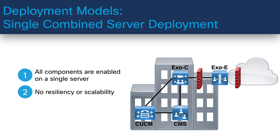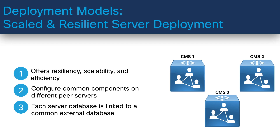As of CMS version 3.0 and later there are two different deployment models. The first is the single combined server deployment, which uses a single CMS with all necessary services running on the same server — simple to deploy and support, but it offers no resiliency or scalability. The alternative is the scaled and resilient deployment model, which can be applied to a group of three or more Cisco Meeting Servers, where common core components can be configured on multiple or separate servers, achieving scalability and redundancy through clustering certain key CMS services.